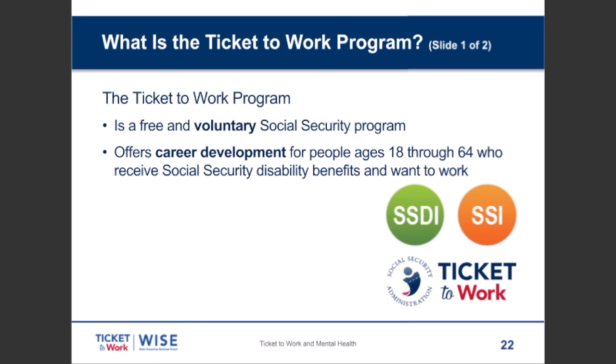The Ticket to Work program was signed by Bill Clinton in December of 1999. It is a free and voluntary Social Security program that can provide career development and all kinds of other services to people aged 18 through 64 who receive a Social Security disability check — either SSI or SSDI — and want to go to work. It's free and voluntary. If you want to do this after you've talked with people, that's fine — no charge.